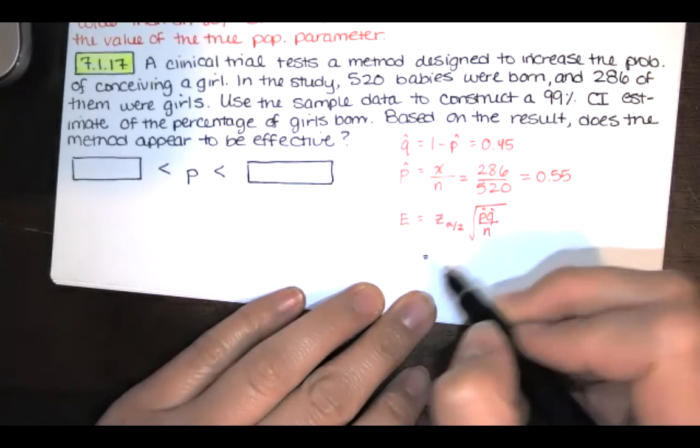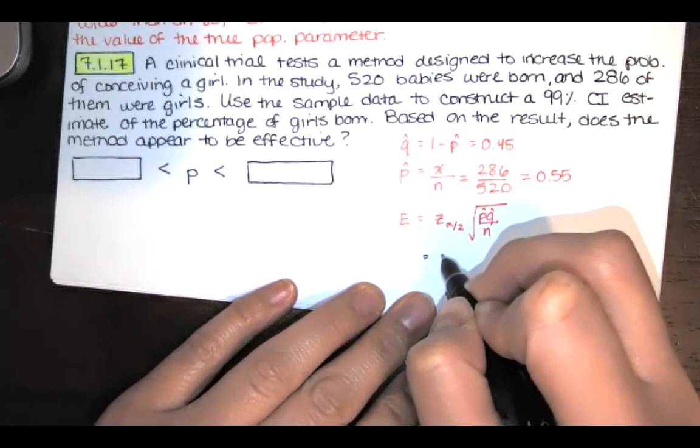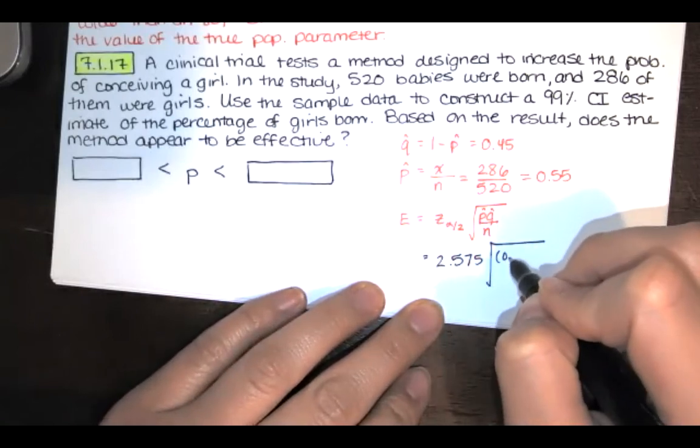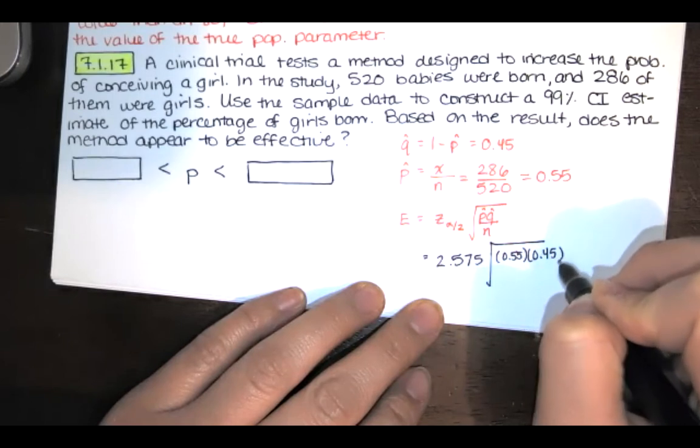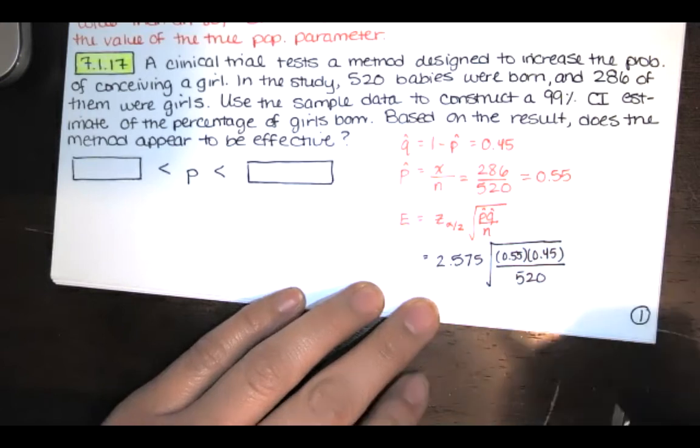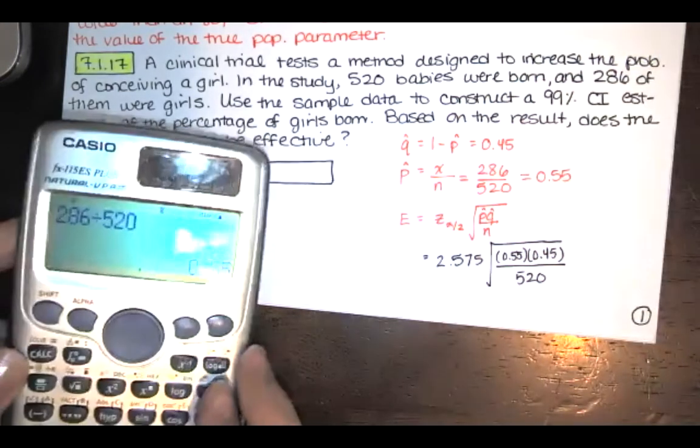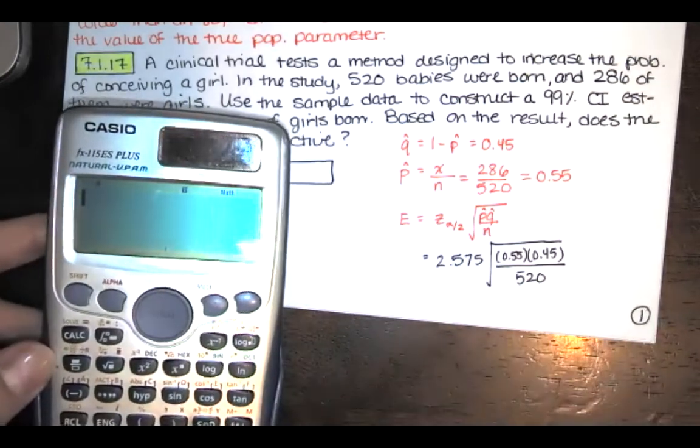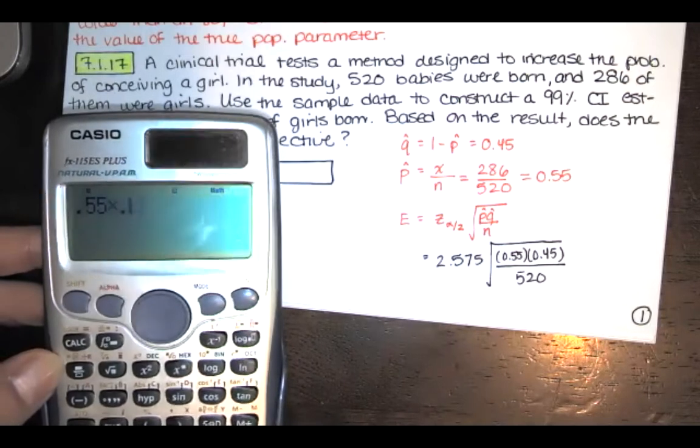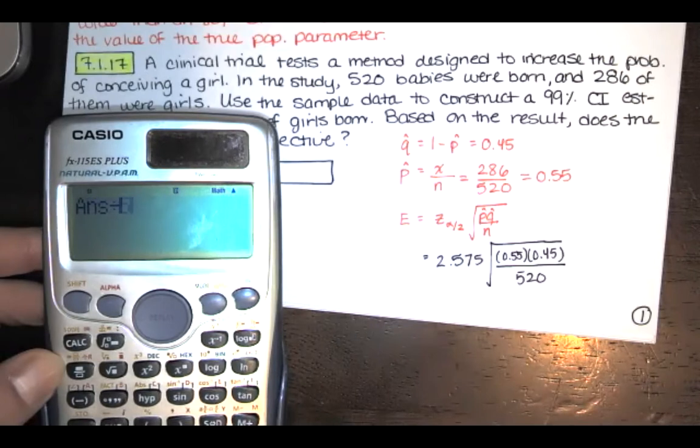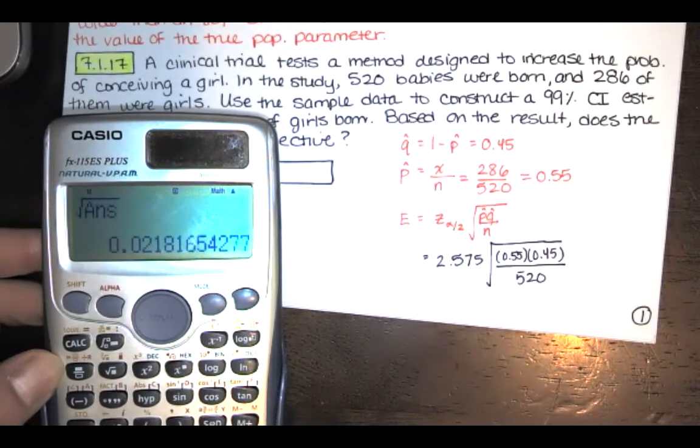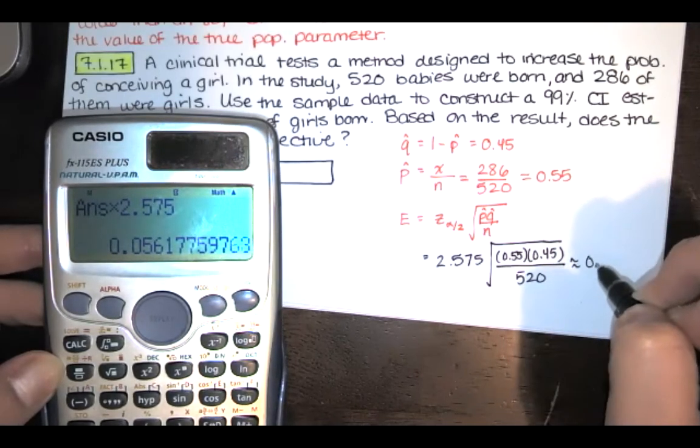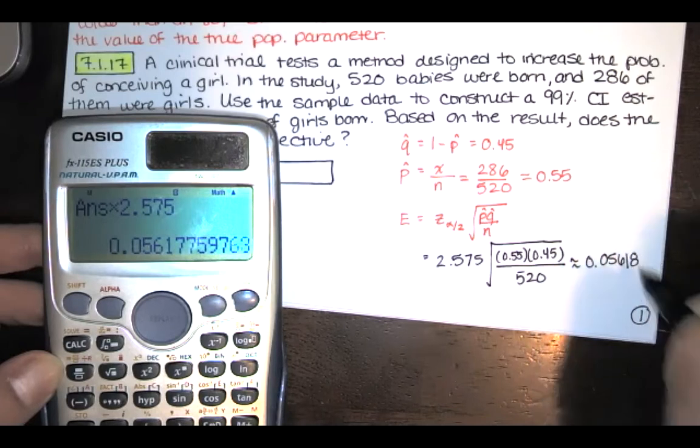So I find the Z score that corresponds to that confidence level. And then I multiply by the square root of P hat times Q hat divided by the sample size. Normally what I do is I evaluate this expression under the radical first. So we do 0.55 times 0.45 divided by 520. We take the square root of the answer. And then we multiply by 2.575. We hit equals. And we get a margin of error of approximately 0.05618.